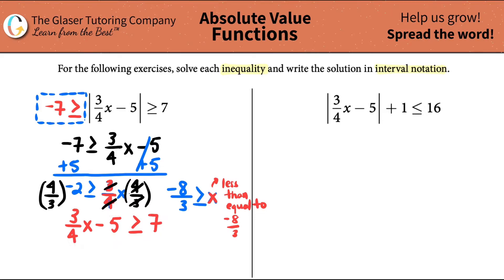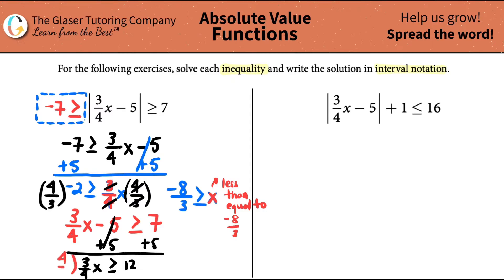Now let's solve the second equation. We've got to solve for x, so I'm going to add 5 on both sides. That gives us 3/4x is greater than or equal to 12. Then multiply by 4/3 — the 4s cancel out and the 3s cancel out. I have a 3 on the bottom and 12 on top, so 12 divided by 3 reduces to 4, and 4 times 4 is 16. So x is greater than or equal to 16.